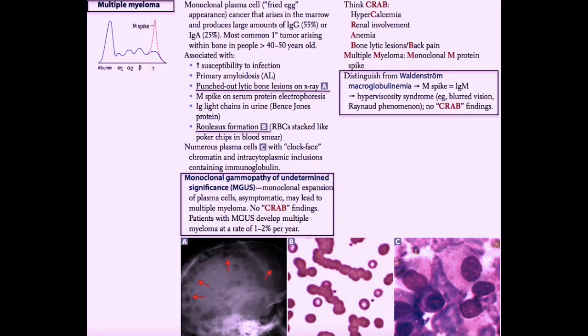One other related condition is called monoclonal Gammopathy of Undetermined Significance. It's a long name. We abbreviate it by calling it MGUS, or M-G-U-S. And the name basically explains what's going on. So it's a monoclonal gammopathy, meaning that there will be an M-spike on your serum protein electrophoresis. So there is a monoclonal immunoglobulin production going on here.